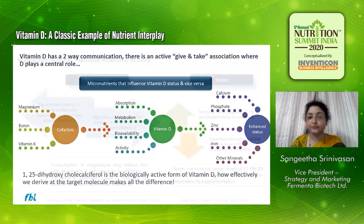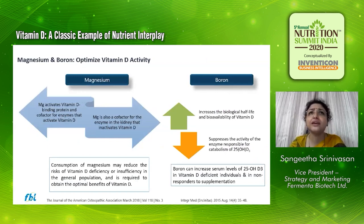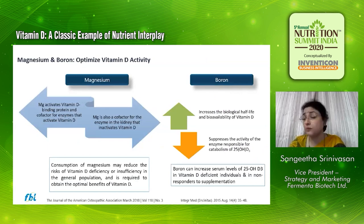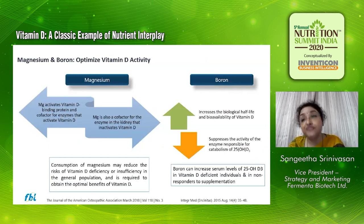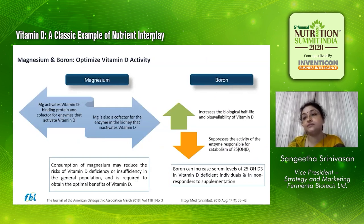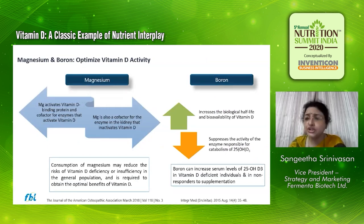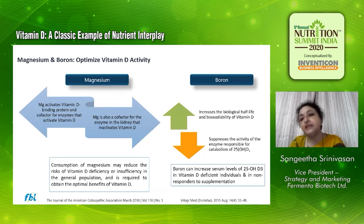In the deep dive, we are first going to look at the co-factors magnesium and boron. I would say magnesium and boron are the most underrated, unrecognized minerals. Magnesium is slowly gaining importance, but boron not much. One of the reasons that magnesium deficiency is not very well stated or identified in India is that there is not much data support.